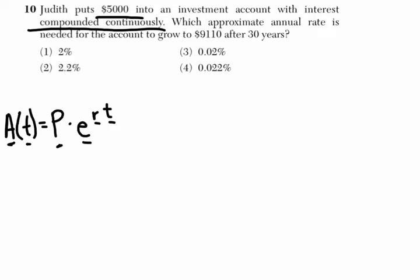So they're saying which approximate annual rate is needed for the account to grow to $9,110 after 30 years. Alright, so we want to find what the principal amount will be. We'll say T is years, so I'll do 30, equals our principal balance, that we don't know, times E to the RT. Oh, no, we do know our principal balance. What am I saying? Okay, sorry.